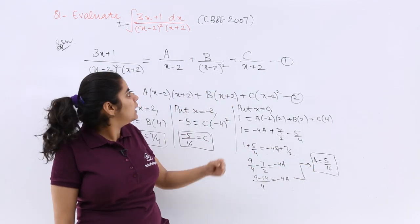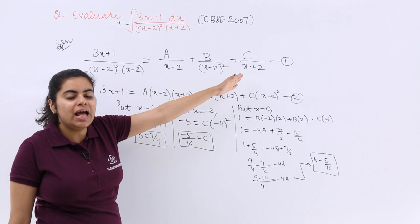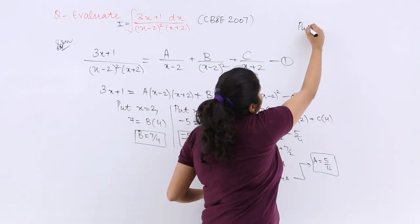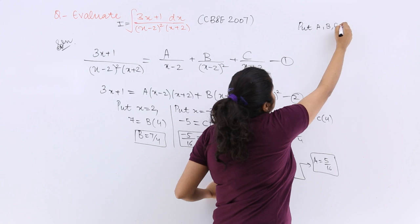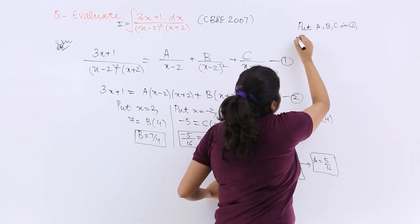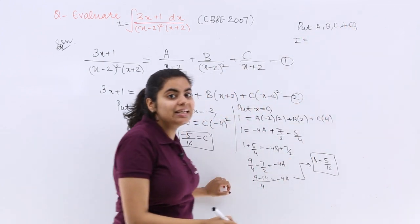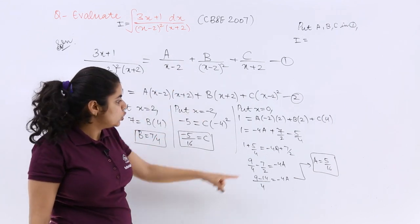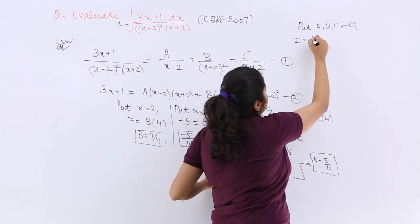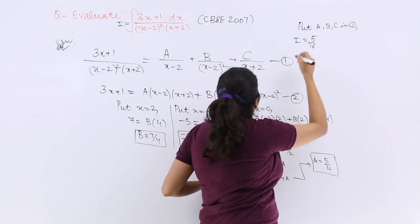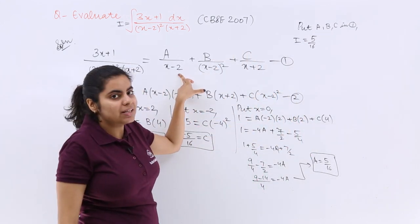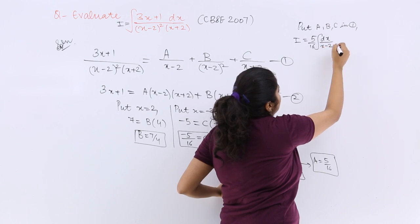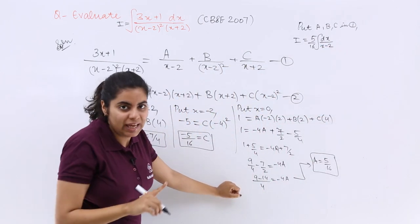Now what is left? Simply integration with the help of this form is left. So I will be writing put A, B, C in equation 1. So my integration is: integration A upon (x minus 2). So 5 upon 16 integration dx upon (x minus 2). This is about A.